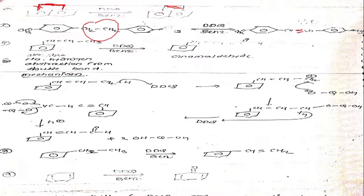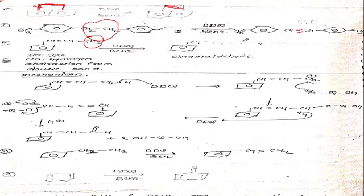Next: what if there is no hydrogen abstraction from the double bond? Because there is already a double bond and no hydrogen is required for abstraction. That's why here there is a CH3 group — the CH2 in presence of DDQ gets converted to CH double bond CH, and then the CH3 gets converted to C=O, meaning it gets converted to an aldehyde compound.